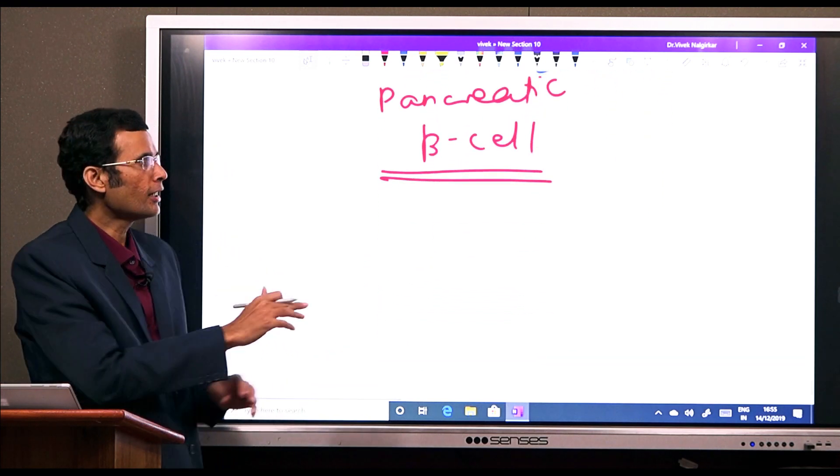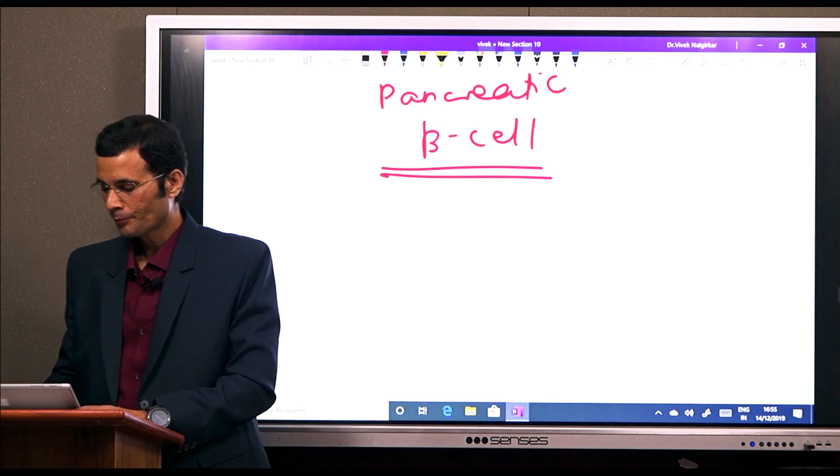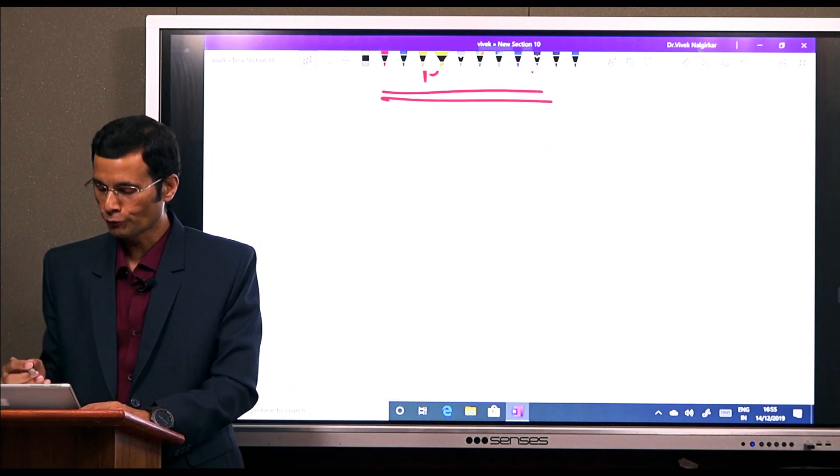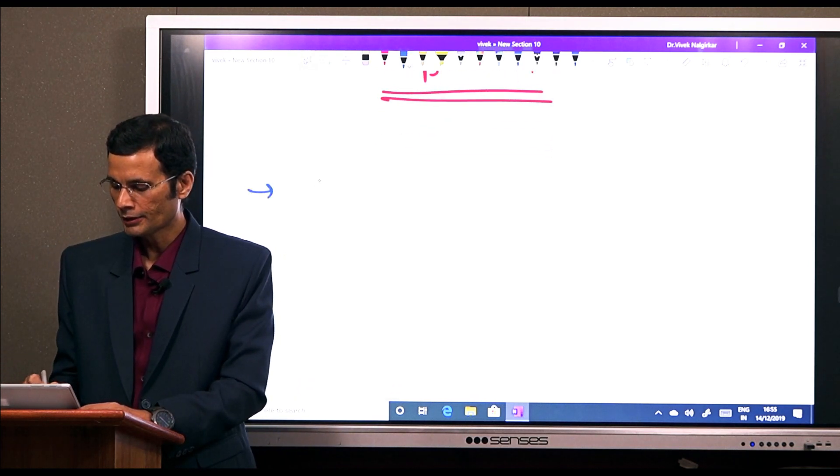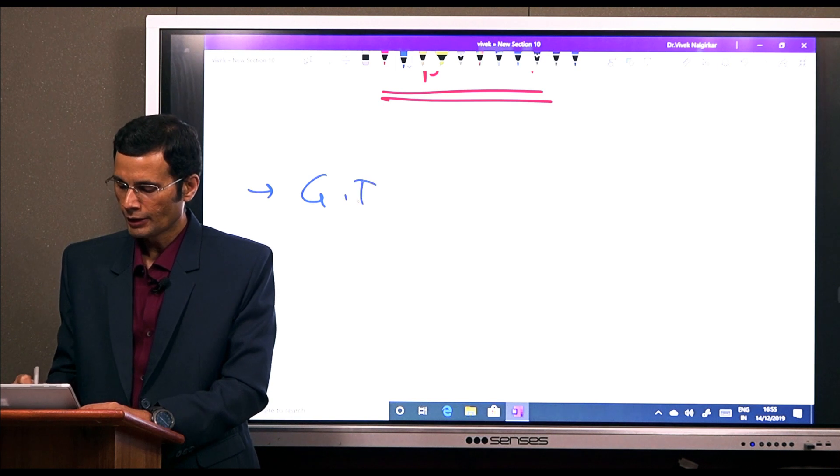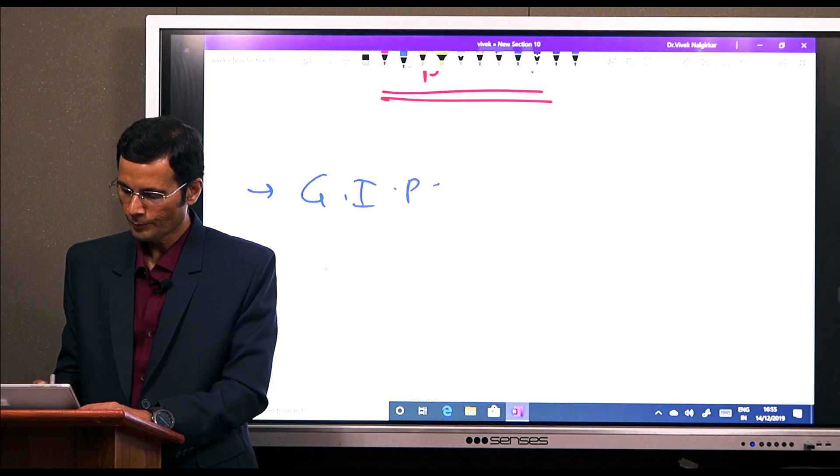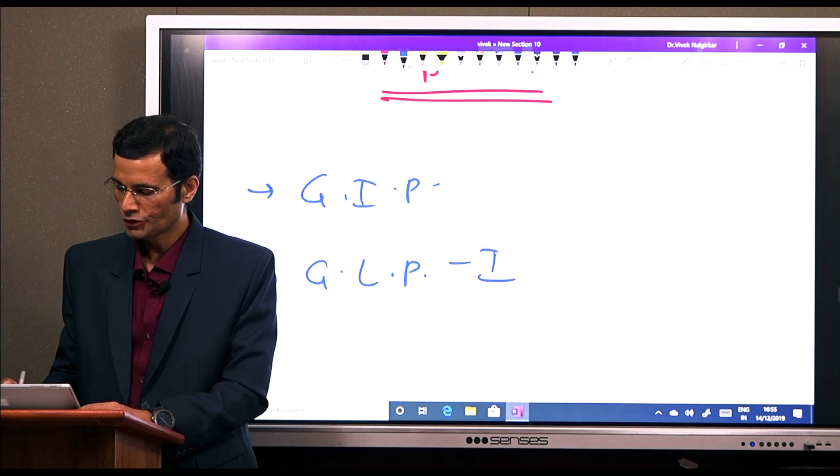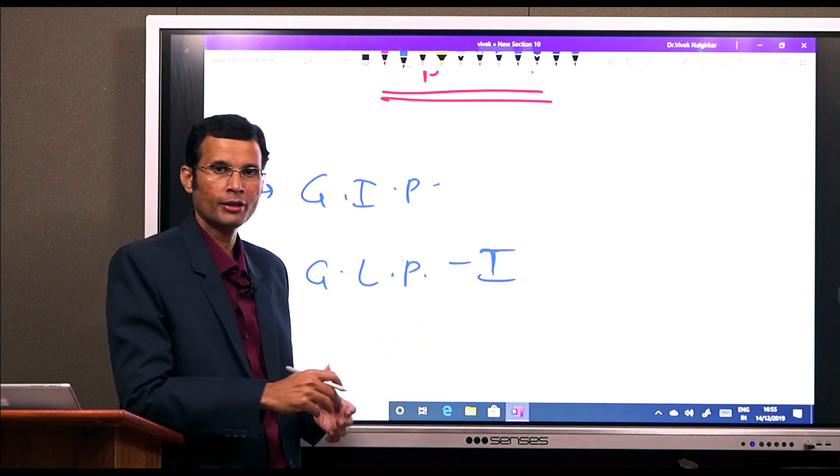Now what are those incretins? The known incretins so far are these ones: GIP and GLP, GLP type 1.